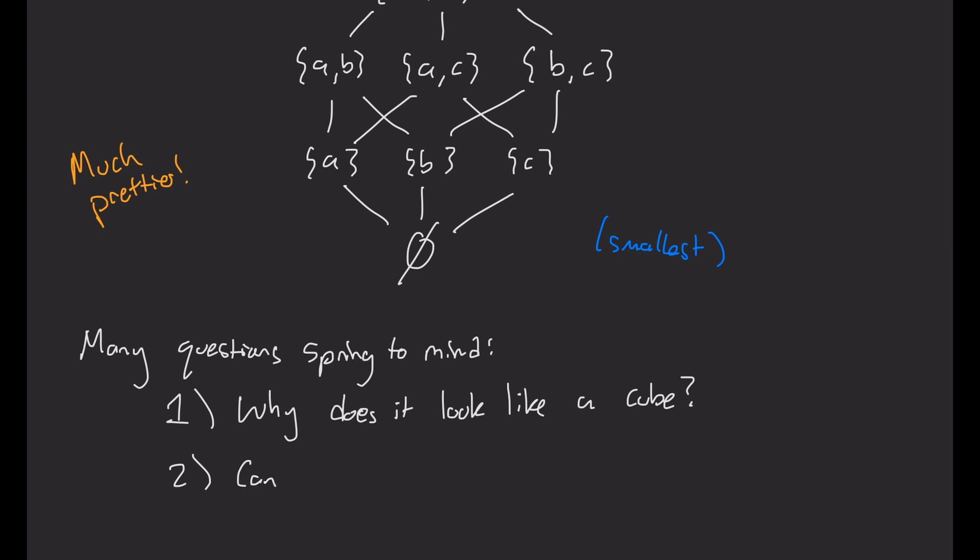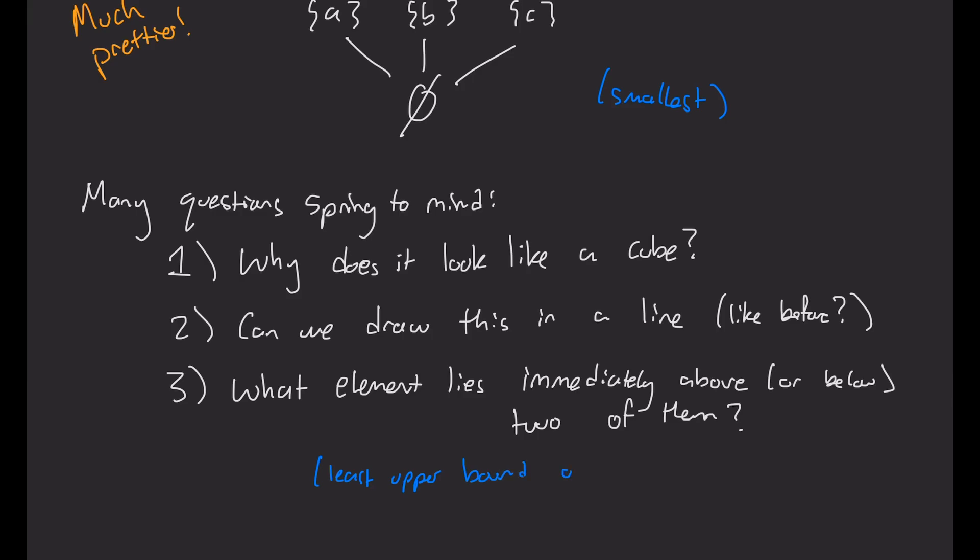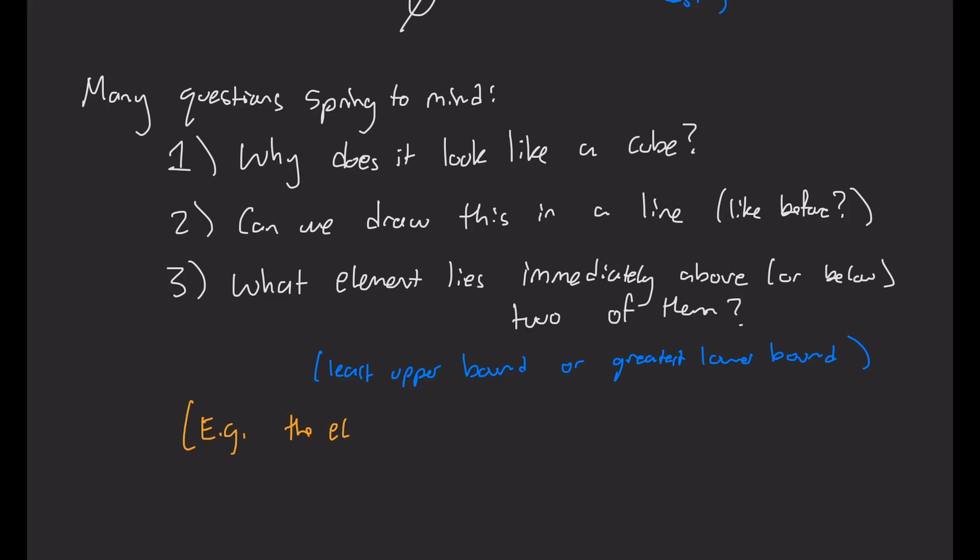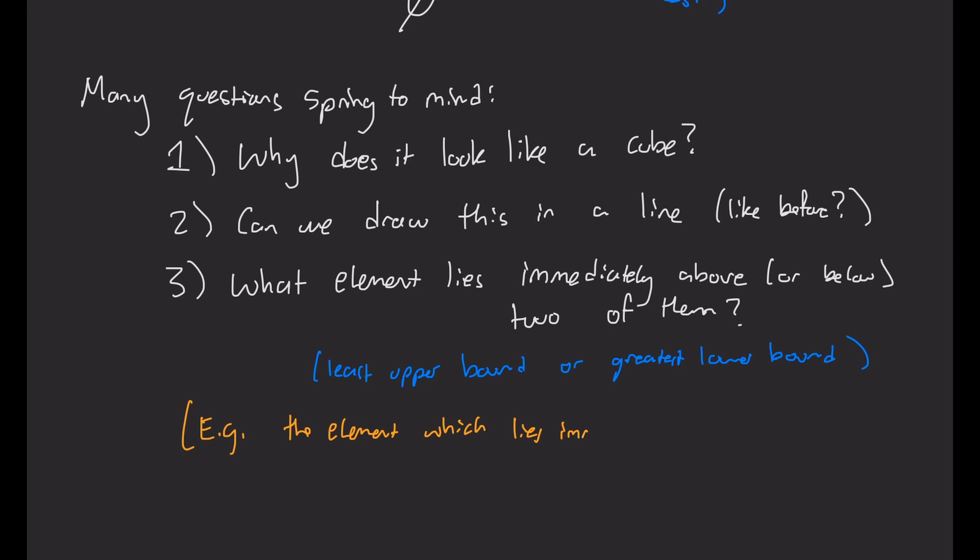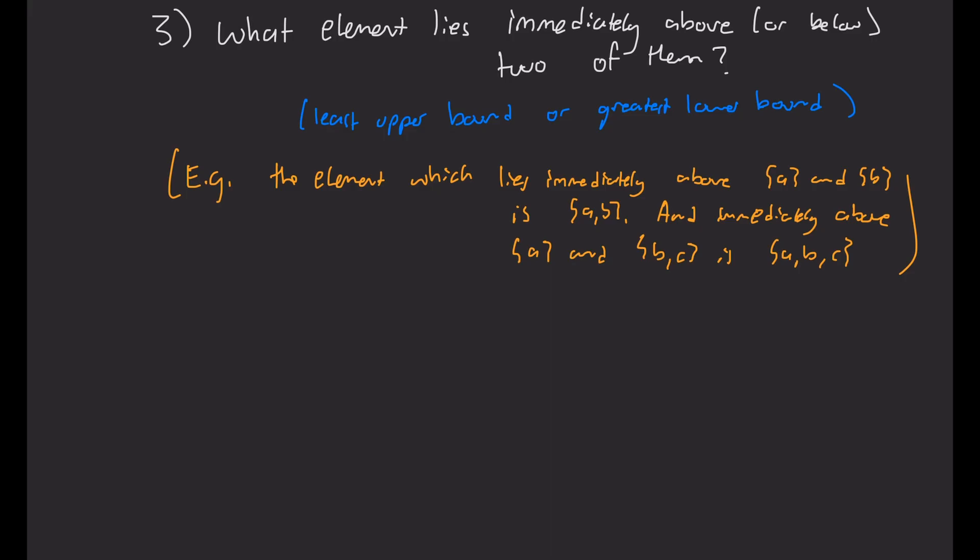Another question that I can ask is, okay, well, we saw that the previous example can be drawn on a line. Can I draw this one on the line? Or another question that comes to mind when I talk about order is, if I take two elements, what is the element that lies immediately above or below those two elements? So the least upper bound or the greatest lower bound is the technical term. So as a hint or an example here, the element that lies immediately above the singletons A and B is just the set A comma B. And the element that lies above A and B C is the set A, B C. So can you think of how to generate that larger set from the two smaller sets? And can you do the same thing with the lower bound?